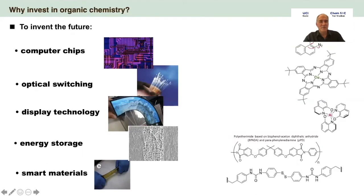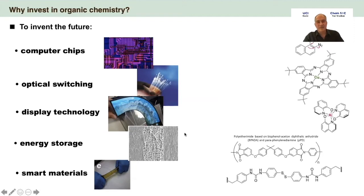What kinds of molecules can you build with that? What kinds of functionalities can they have? If you look at every single computer device that you own - your cell phone, your computer - the integrated circuits in there were made using organic chemistry. The photoresist that they used to create those intricate patterns were organic molecules. The new versions of optical switching are based on organic frameworks. If you've heard of OLED displays - organic light emitting diodes - those are organic molecules. Energy storage like lithium ion batteries are all based on polymer membranes made out of organic molecules like polypropylene. Smart materials that can tell you when there's been some sort of a break and can heal themselves, those are based on organic molecules.